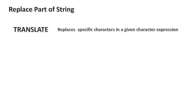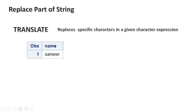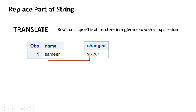Now let's look at another function: TRANSLATE. This replaces specific characters in a given character expression. For example, if you have the name 'Samir' and you want to replace the characters 'a' and 'm' with 'i' and 'x', you can use TRANSLATE. You cannot use TRANWRD here because 'Samir' is a complete word — TRANSLATE is for replacing individual characters rather than whole words.